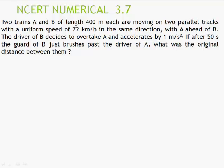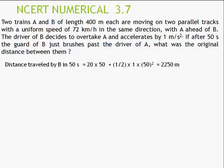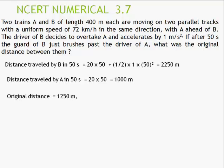The distance travelled by B in 50 seconds is: s = ut + ½at² = 20×50 + ½×1×50² = 1000 + 1250 = 2250 meters. A has also travelled some distance: 20×50 = 1000 meters. The difference — 2250 − 1000 = 1250 meters — is the original distance between the trains. Alternatively, this question can be done using relative motion.